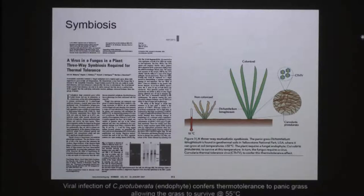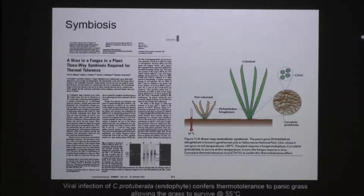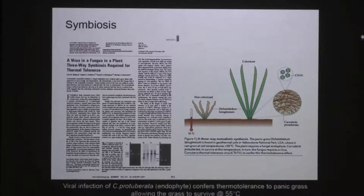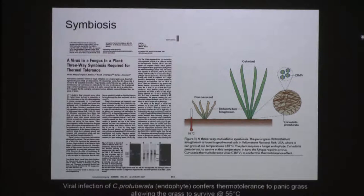Up until a couple of years ago, we've always looked at viruses from a pathogenic angle — viruses cause disease, they are the nasty buggers. However, there is a beautiful paper from Marilyn Rusnik's group about ten years ago looking at panic grass growing at Yellowstone National Park at 55 degrees centigrade. That grass is colonized by a fungus, and that fungus is infected by a virus. The virus induces hypovirulence in the fungus, reducing its pathogenicity so it doesn't completely outgrow and kill the grass. Remove the fungus — and by default the virus — and that grass dies straight away.